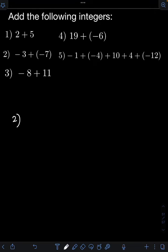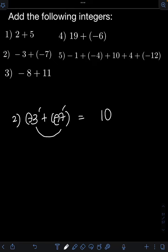For number 2, we have negative 3 plus negative 7. So this time we are adding like signs again, but they are both negative. So we simply add the absolute value of the numbers, disregarding the sign. So 3 plus 7, that will be 10. And then copy the same sign on the final answer, which is negative. So we have negative 10 as the final answer.